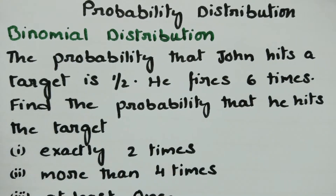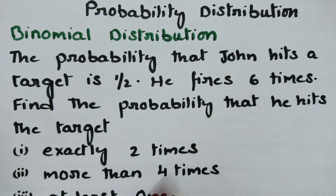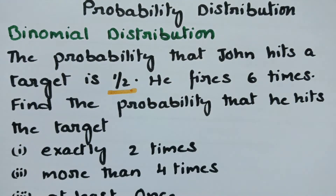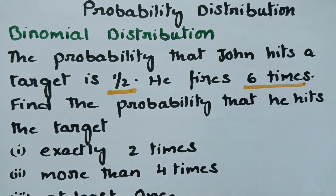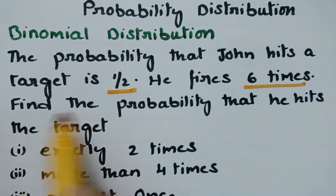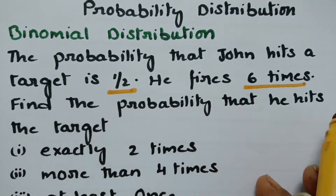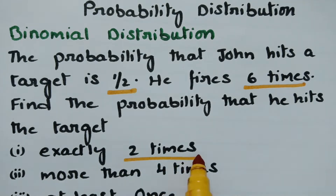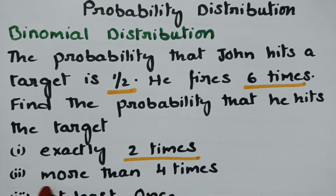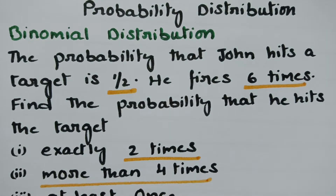The probability that John hits a target is half, so P is equal to half and Q is equal to half. He fires 6 times, so n is equal to 6. We have to find the probability that he hits the target for exactly 2 times, more than 4 times, and at least once.